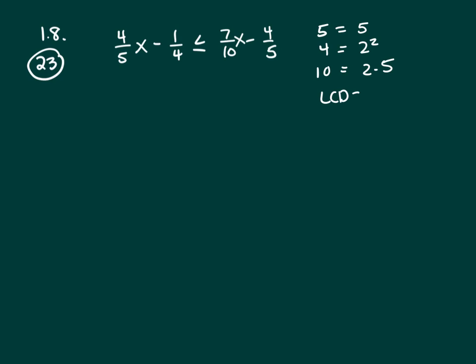So my LCD will list your factors. We only have 2s and 5s. And we want to list each factor the most it shows up in any one denominator. So how many 2s are here? None. How many are here? 2. How many are here? 1. Well, what's the largest number you said? 2.